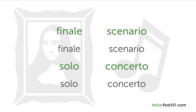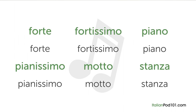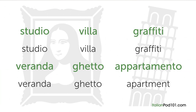Music and art also have plenty of Italian loanwords: finale, scenario, solo, and concerto are all commonly used in English. On a technical level there are forte, fortissimo, piano, pianissimo, motto, stanza. In arts and architecture: studio, villa, graffiti, veranda, ghetto, and apartment — from 'appartamento' — are all Italian loanwords.